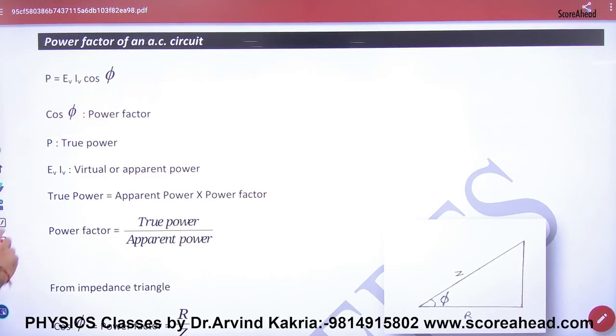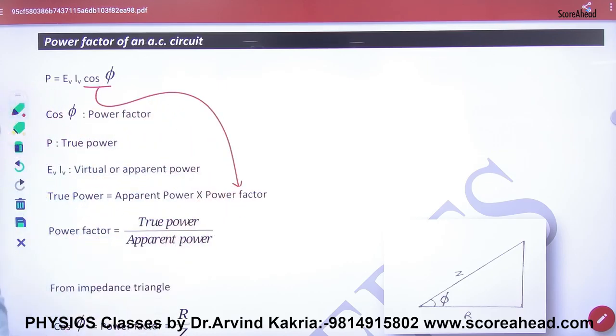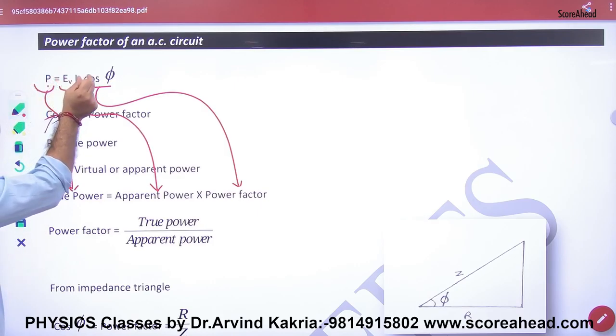Therefore, this is clear. E V and I V multiplication is apparent power, and this P is average power or true power. True power is apparent power into power factor.